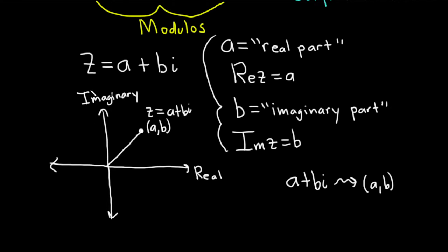The notation I'm going to use for modulus is an absolute value symbol around it. The modulus of a complex number is the distance between the complex number and the origin in the complex plane.